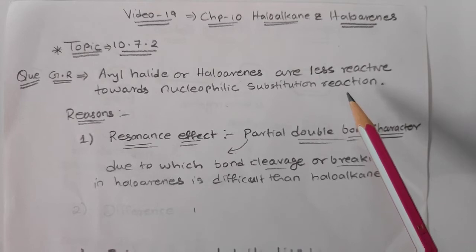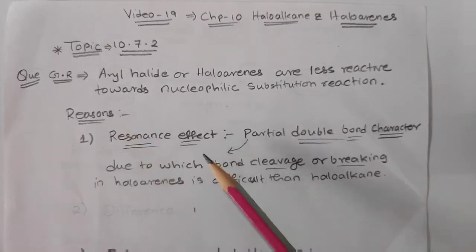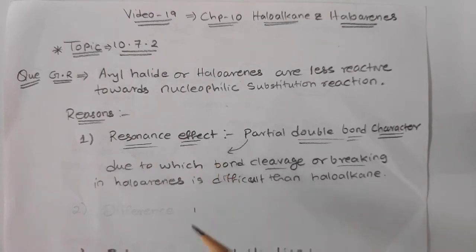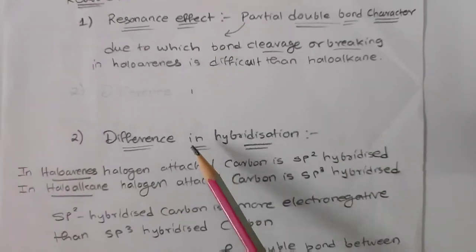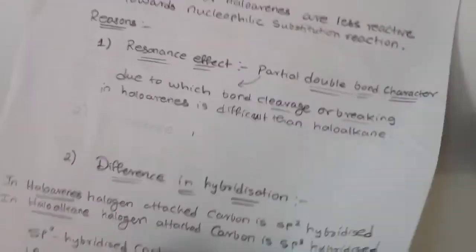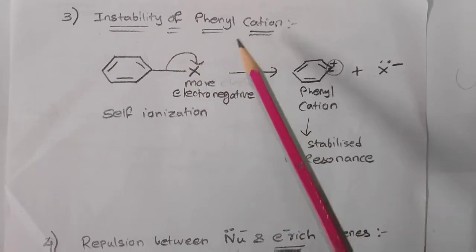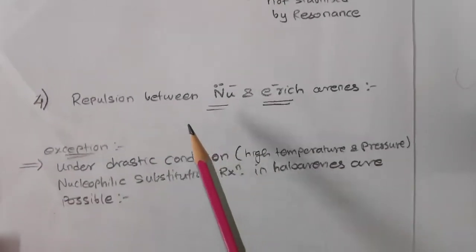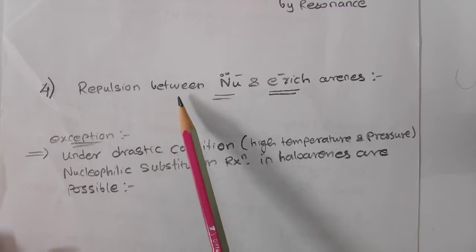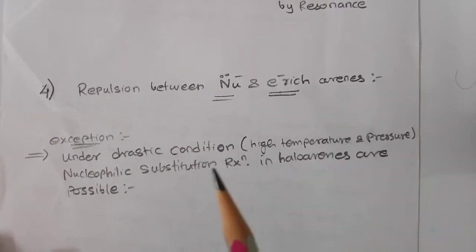There are four reasons in total. The first reason is the resonance effect. The second reason is difference in hybridization. The third reason is instability of phenyl cation, and the fourth reason is repulsion between the nucleophile and the electron-rich arene.